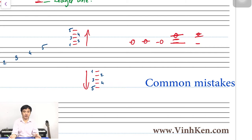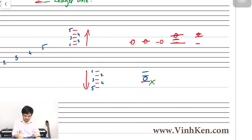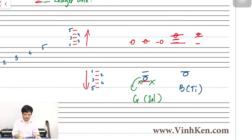Another important mistake for new music learners is writing unnecessary ledger lines. For example, I have a note here and you add an extra line — actually, we don't need that extra line. Just enough. For example, this is G, also below the staff. If I write the note B, I just have this one line only — this is B. We don't need an extra line above it. That is a mistake.